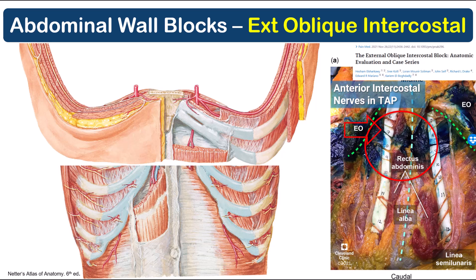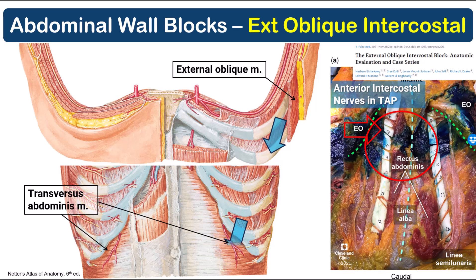Unfortunately, the paper doesn't provide any explanation of the anatomical pathway by which this could occur. However, if we look at images from Netter's Atlas of Anatomy, we can see that the plane between the ribs and the overlying external oblique muscle may communicate medially with the plane superficial to the transversus abdominis muscle. Spread into the rectus sheath, however, would still seem to be limited by the linea semilunaris. So this still remains to be fully elucidated.